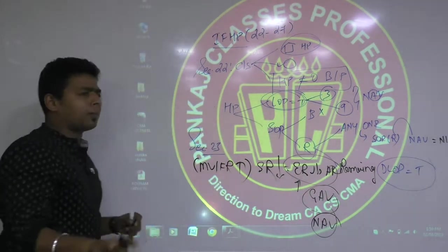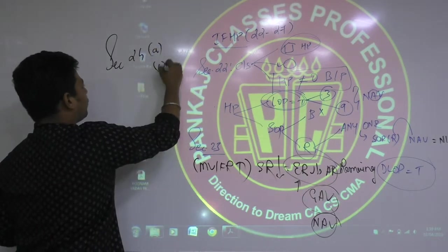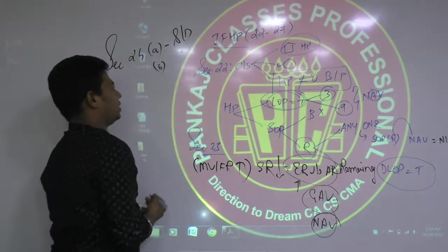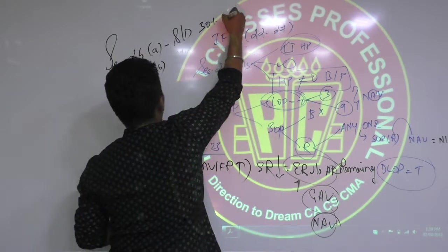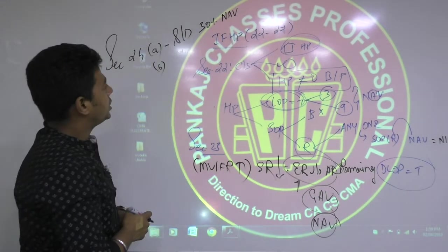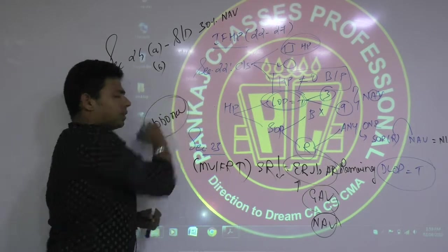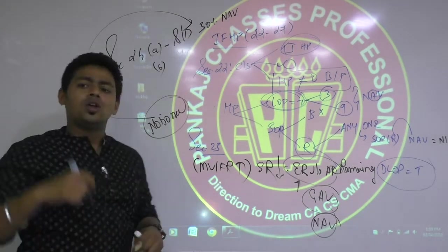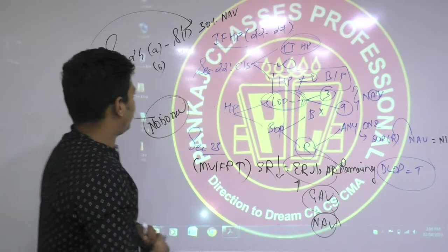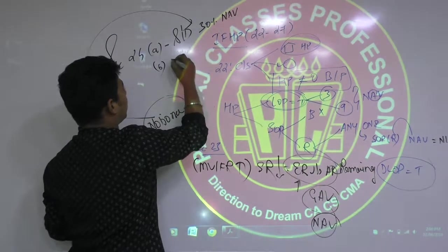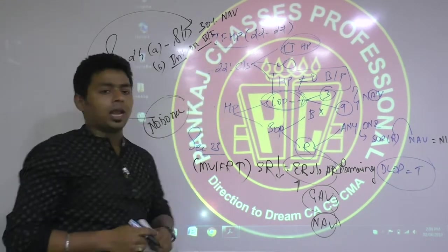From net annual value we apply two deductions. Section 24 has only two deductions: 24A and 24B. 24A is the standard deduction of 30% of net annual value. In this chapter, income is taxable on a notional basis and expenses are also given on a notional basis — actual income and actual expenses are not relevant. The only actual expense that is relevant is interest on borrowed funds, which is allowed as a deduction under Section 24B.